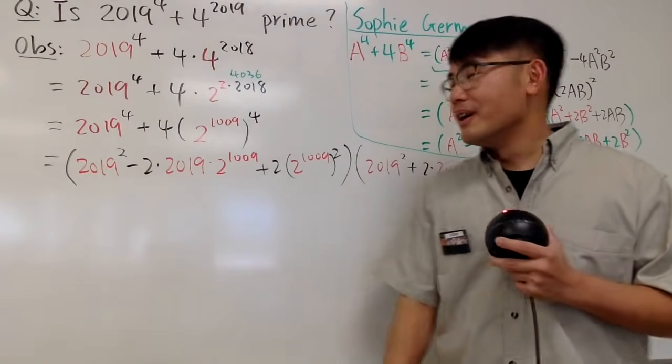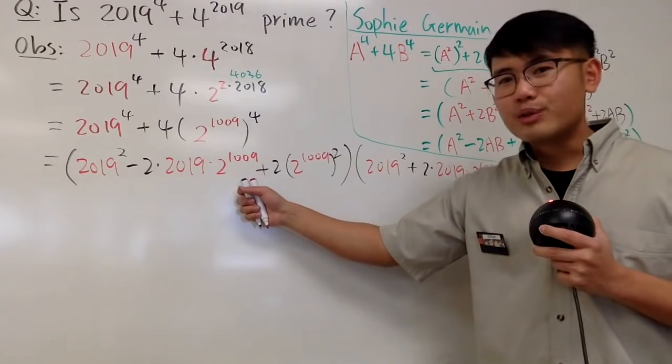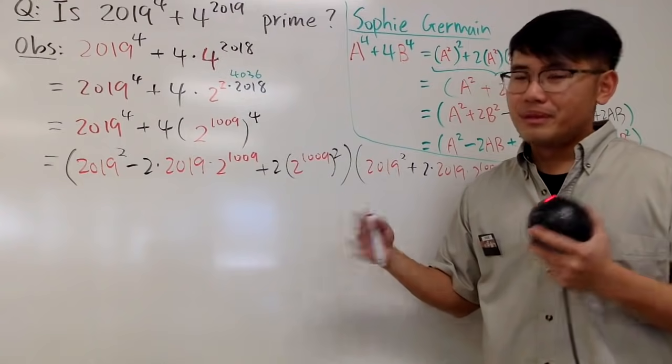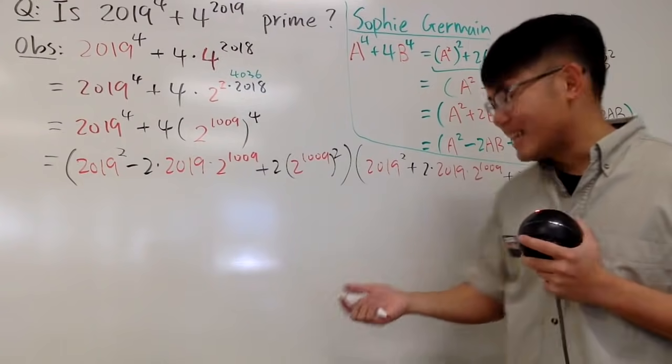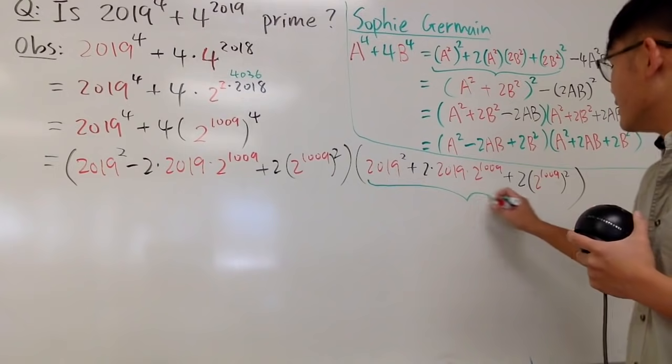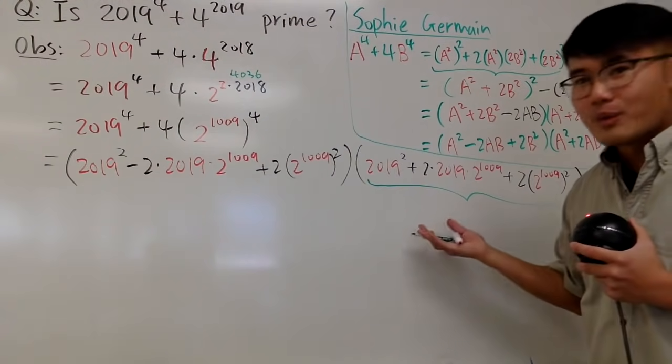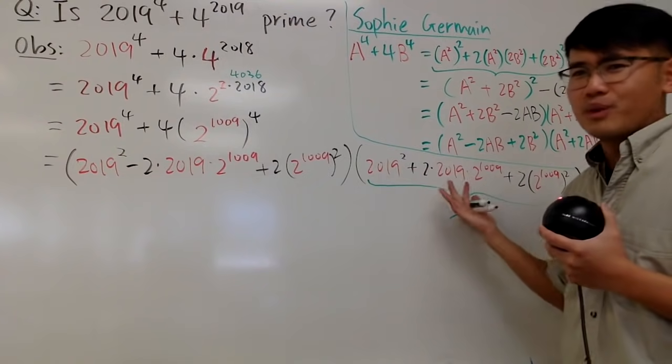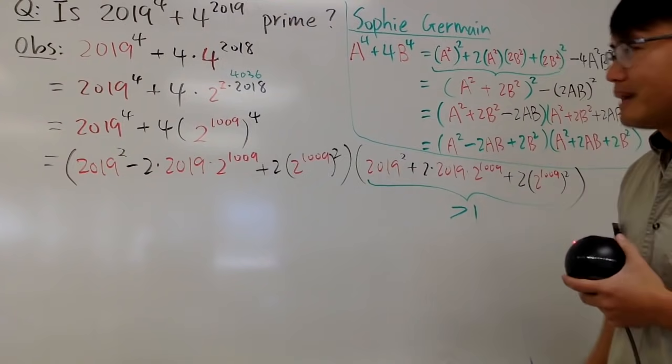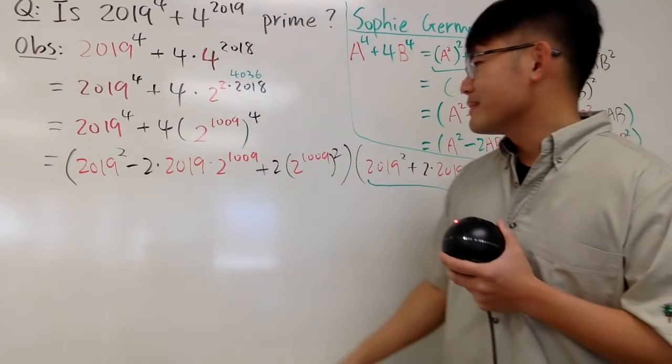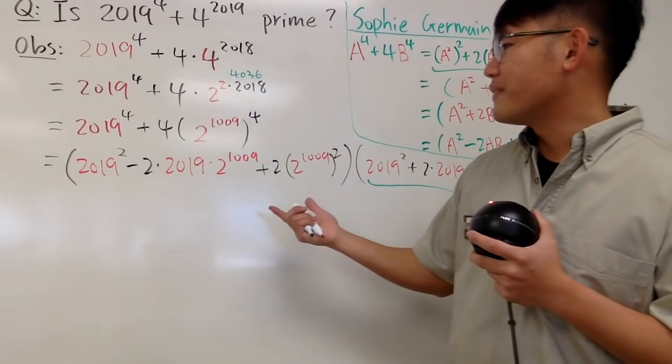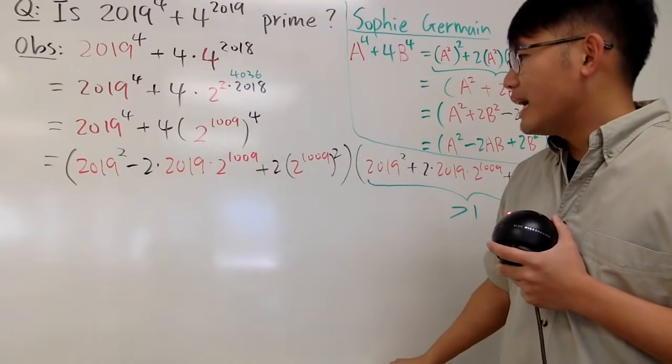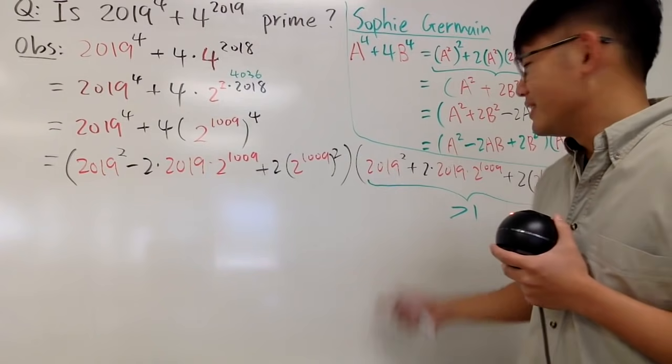And then we multiply with the second factor, which is pretty much the same thing. Instead, you have a plus right here instead of the minus there. So as you can see, we actually were able to factor this into a product of this number times this number. And now you have to be careful. You have to show that this is not equal to 1, and this is not equal to 1. Because if one of the numbers is equal to 1, technically, you're not really factoring it, right? Of course, this right here, it's really clear that it's greater than 1. Why? Because everything is positive, and you're adding in these huge numbers. Of course, this is greater than 1.